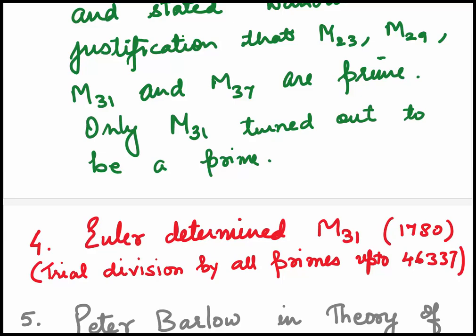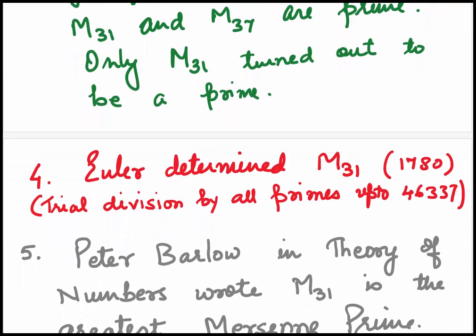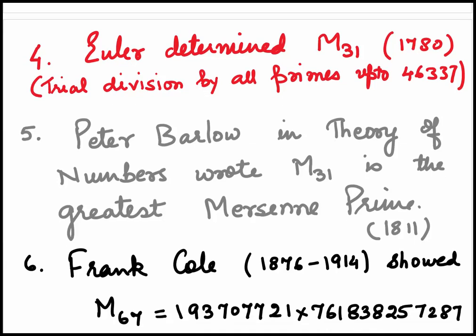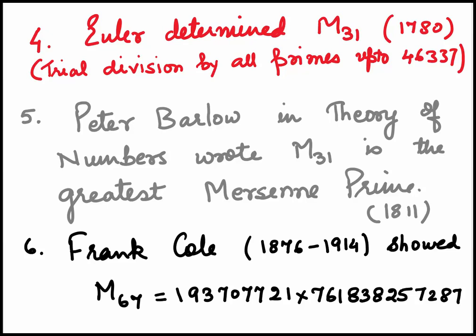In 1780, Euler determined M31. He did by trial division by all the primes up to 46337.